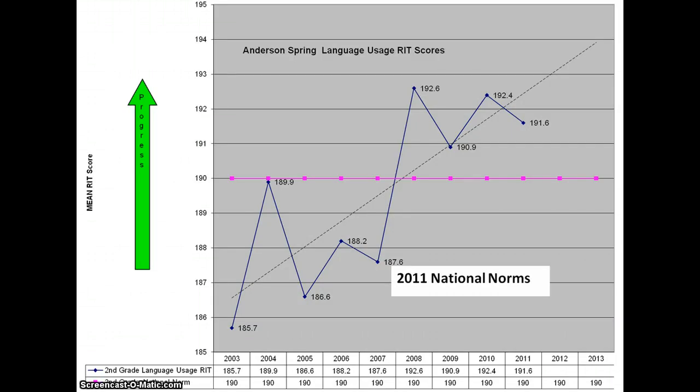Here is our language usage trend line from 2003 to 2011. It's noted that we have four data points above the 2011 national norm, from our national norming process. A very nice trend line, and we want to see those scores staying above the national norm averages. That's the end of our slide — thank you very much for listening.